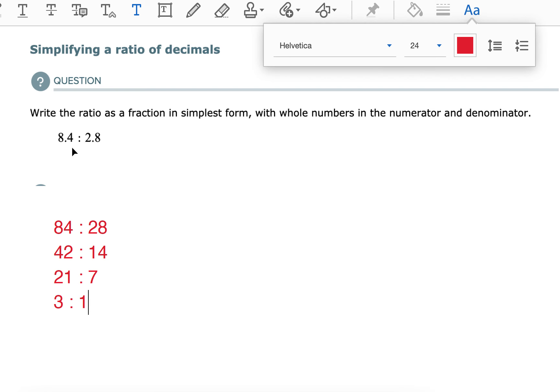So this ratio, 8.4 to 2.8, that's the same thing as the ratio 3 to 1. First, get rid of the decimals. Multiply both sides by 10. You have to multiply by the same number. You can multiply by 100 if there's two decimals there. But get rid of the decimal by multiplying both sides by 10. And then simplify like you would a fraction. Divide them both by 2. Divide them both by 2. And then we can divide both of them by 7.